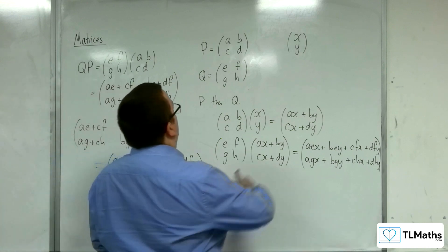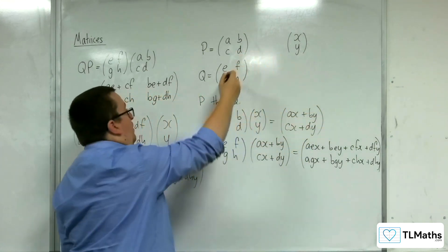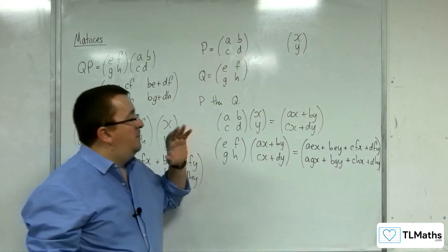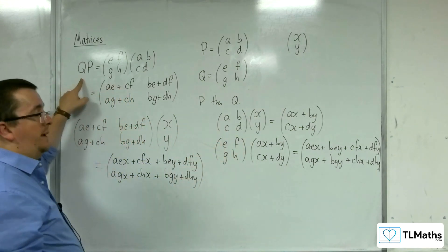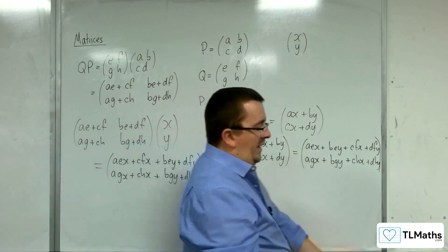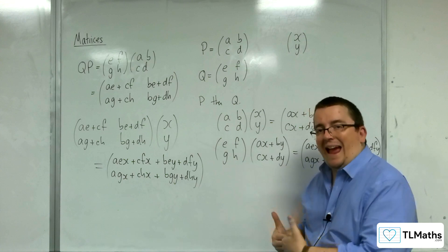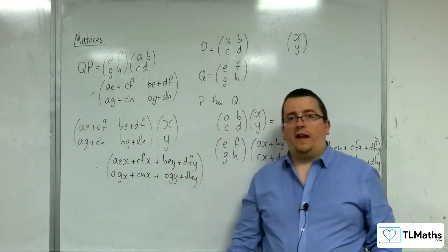So applying matrix P to the original coordinates and then applying matrix Q gives me the same result as applying QP. And so that shows you that with successive transformations, as you keep on including another transformation, they get added on to the left hand side.